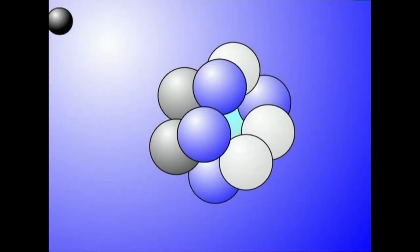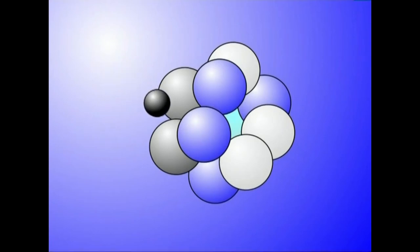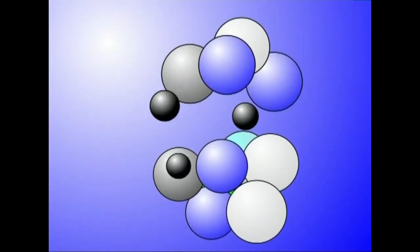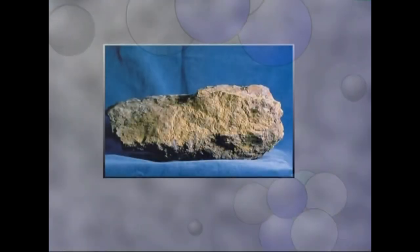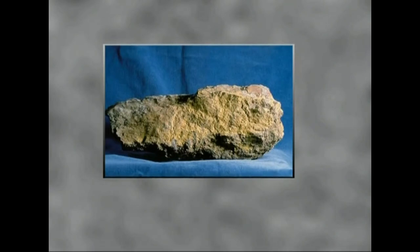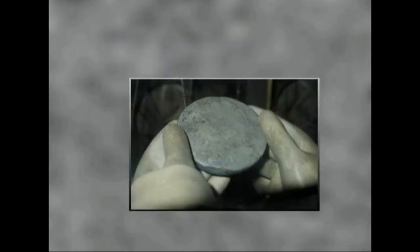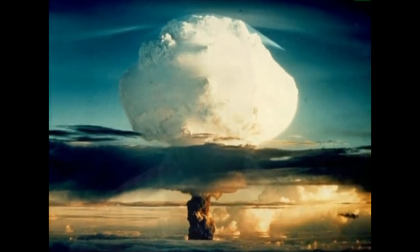Uranio berreunda hogeita mabost isotopoa neutroien bidez fisiona daiteke. Erreaktoren nuklearretan erabiltzen den erregai nagusia da. Uranio berreunda hogeita mazortzi material emankorra da; haren neutroiak atzen manez plutonio berreunda hogeita emeretzi material fisionagarria lor daiteke. Arma nuklearrak egiteko eta erreaktoren nuklearretan erregaitzat erabiltzen da. Hondakin nuklearrek arazo eta arrisku ugari sortzen dituzte.